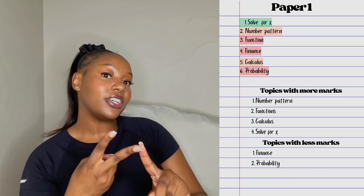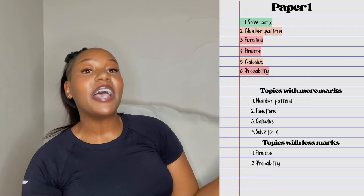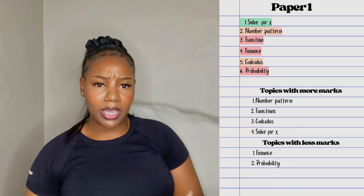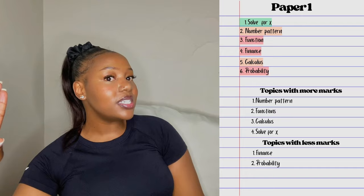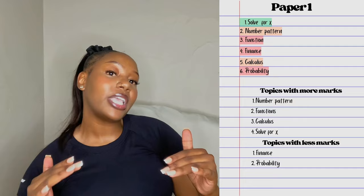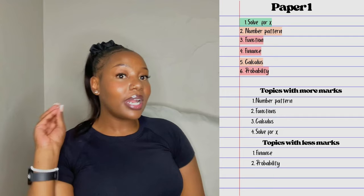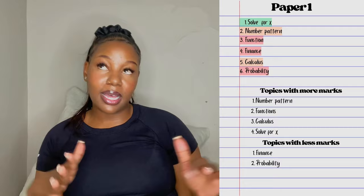Let's say your three bad topics are probability, functions, and finance. Do not start with finance first — finance has fewer marks. Don't start with probability first either — probability also has fewer marks. Start with functions because functions give you the most marks. After you're done with functions, look at the orange topics that also carry a lot of marks — for example, maybe your orange topics are calculus and number patterns.